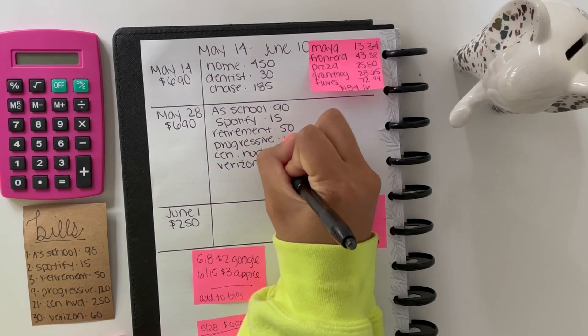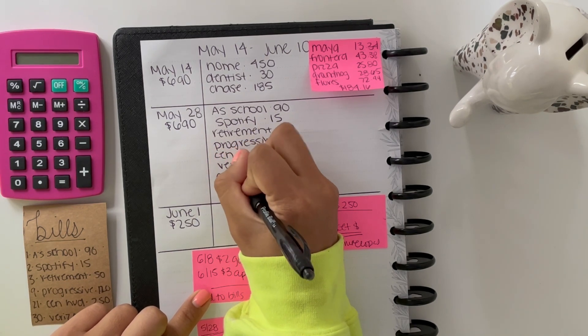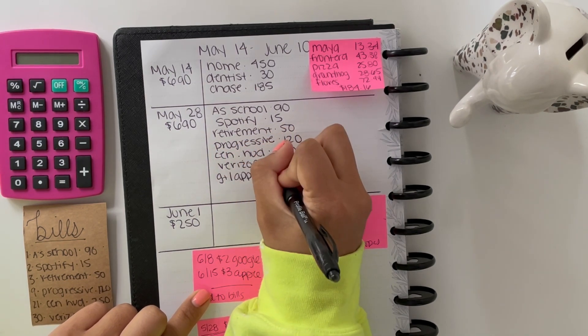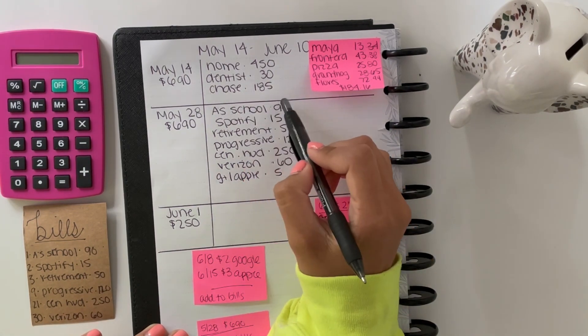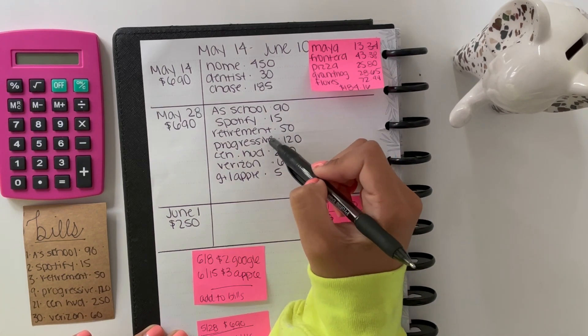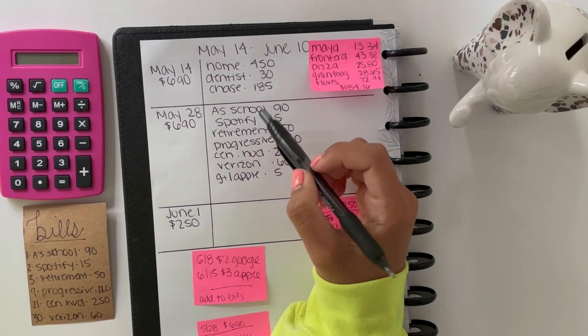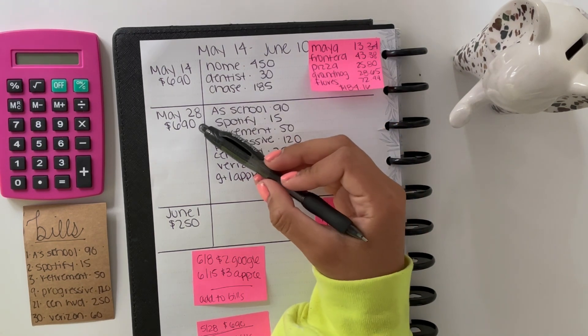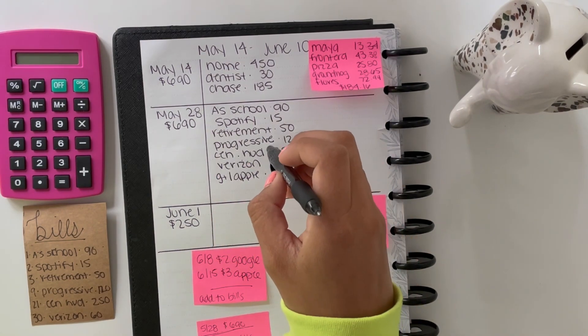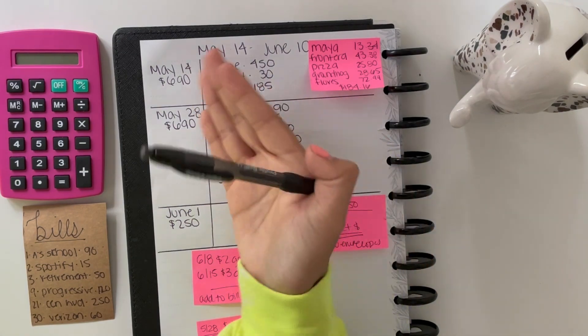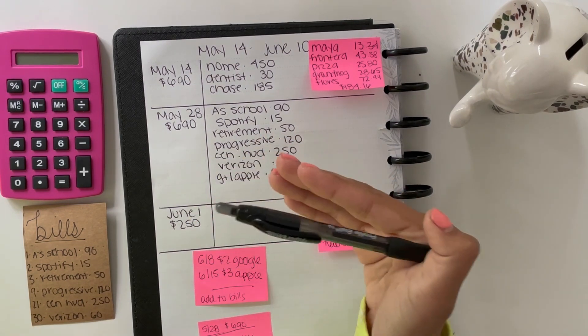Verizon is my Wi-Fi and that is $60 a month. Then I'll just add these two, Google Plus and Apple, and that's $5. All these payments except for my son's school I pay with a check, but Spotify, Progressive, Central Hudson, Verizon, and these come out of my credit card so that I get cash back. When I get this payment, I will pay these back. They don't come until June because they're June bills.